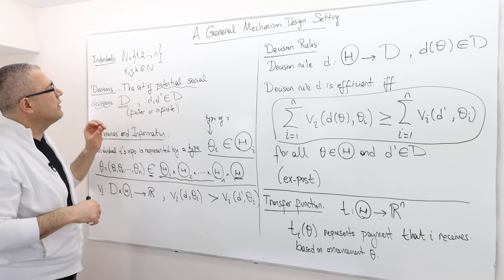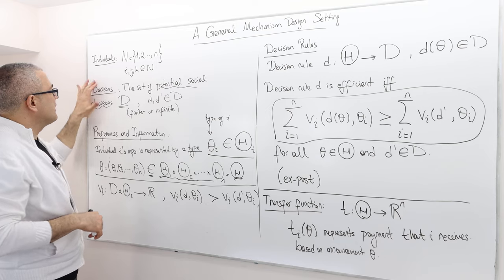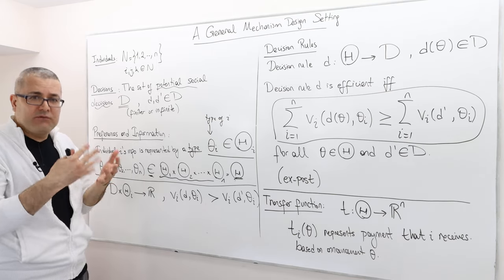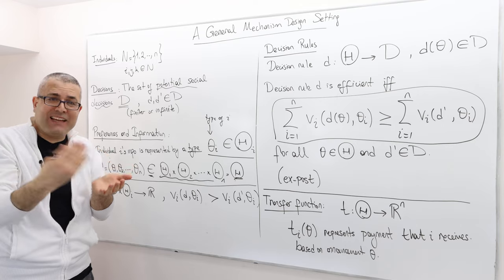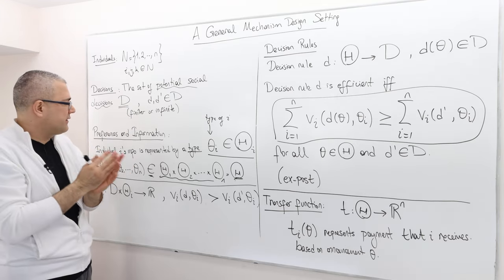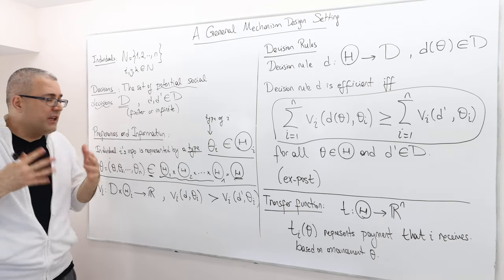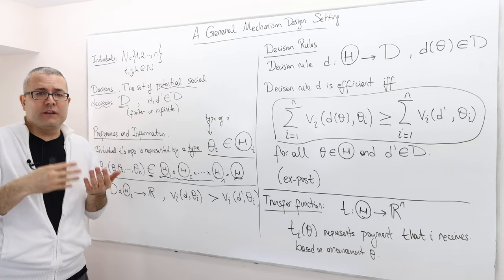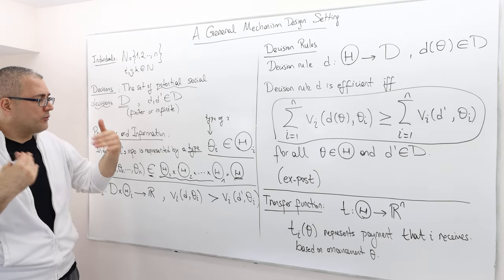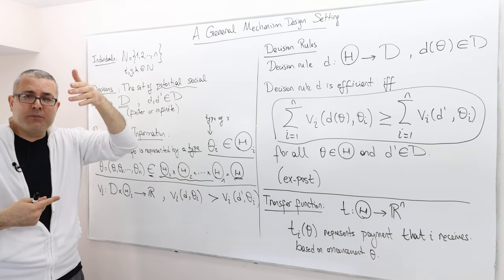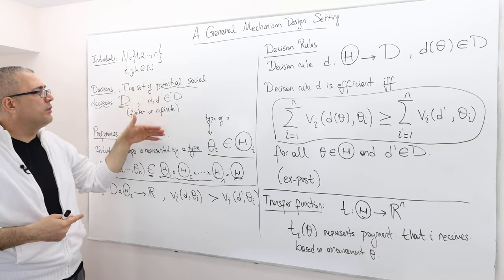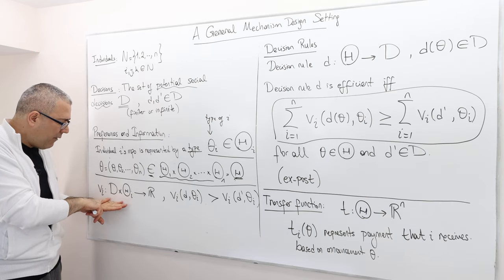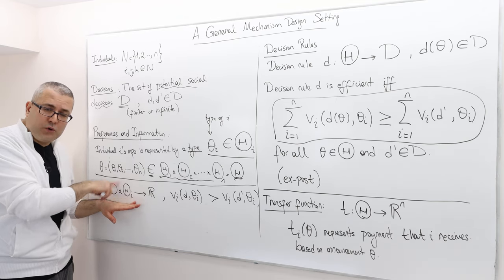Think of a voting environment. In the voting environment, individuals are the voters. The decisions are actually the candidates — each d or d prime is just a candidate, because the voters are going to choose and elect one of the candidates. So the set of decisions is the set of candidates. The private information is each voter's true preference over all alternatives or candidates. So theta i represents a ranking over potential social decisions or candidates.